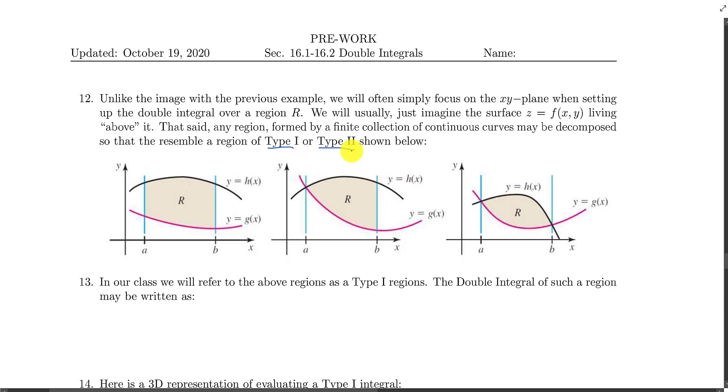You might have some general region like this, something really messy, but it turns out that every single one of these regions, as long as it's formed by finitely many curves, could be broken up into a bunch of either type 1 or type 2 regions, and so this actually is enough to do what we want to do.